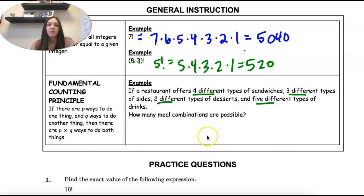So instead of going through one by one and saying this sandwich, this side, this drink, over and over and over, we would just take 4 times 3 times 2 times 5.